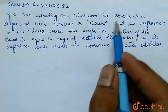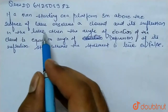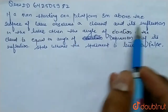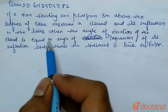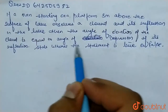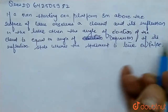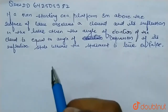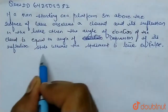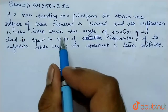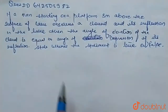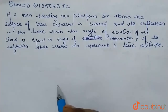A man standing on a platform 3 meters above the surface of a lake observes a cloud and its reflection in the lake. The angle of elevation of the cloud is equal to the angle of depression of its reflection. We have to state whether this statement is true or false.